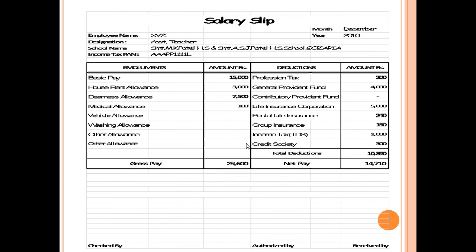This is a sample salary slip. There are two important columns: gross pay and net pay. Gross pay is the total remuneration given by the organization, including all allowances. Net pay — otherwise called take-home — is the amount remaining after all deductions have been made.